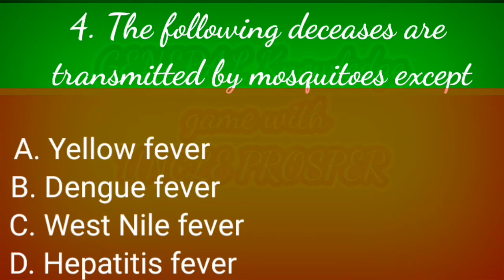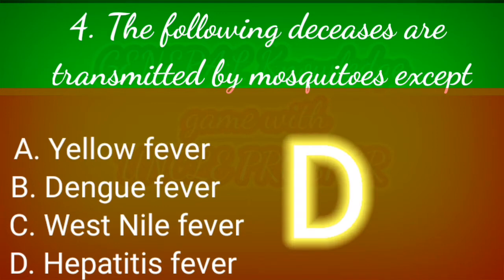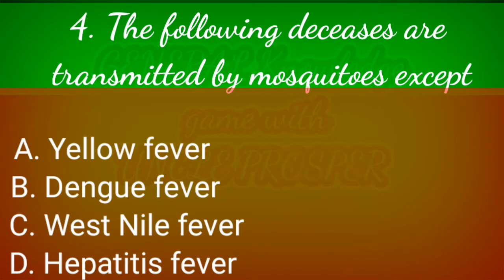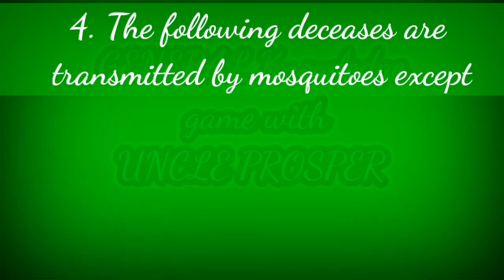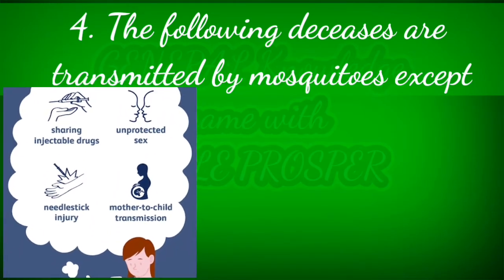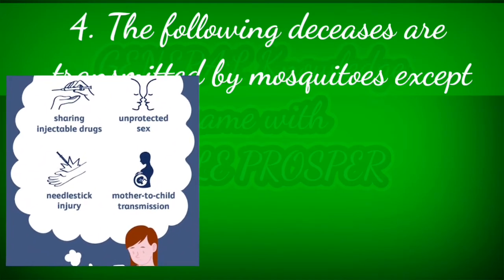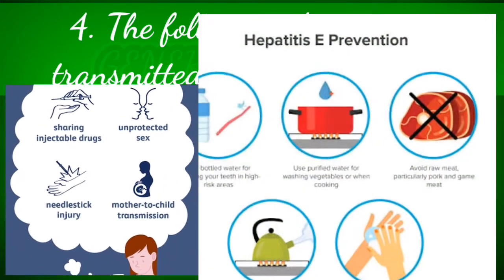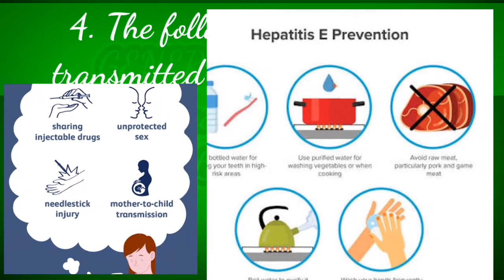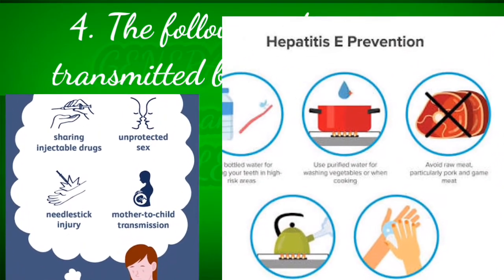Dengue fever is transmitted by mosquitoes, so that is wrong. The correct answer is hepatitis. Hepatitis cannot be transmitted by mosquitoes. It can only be transmitted through unprotected sex, use of infected needles or injection pins, contaminated food, or mother-to-child transmission. It can be prevented by cooking your food very well, among other preventive measures.